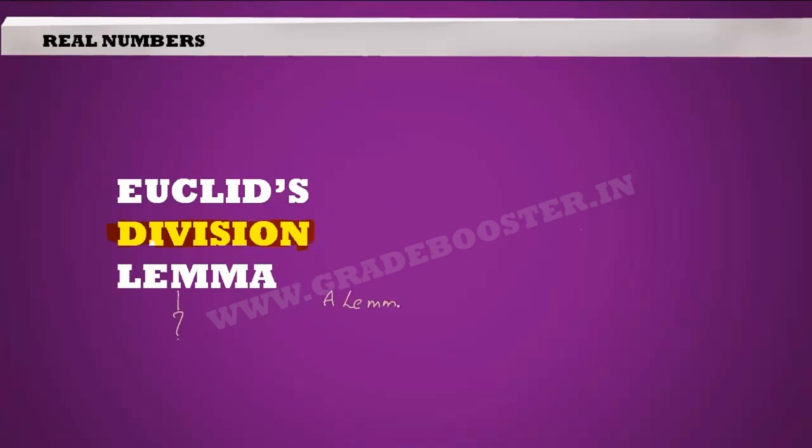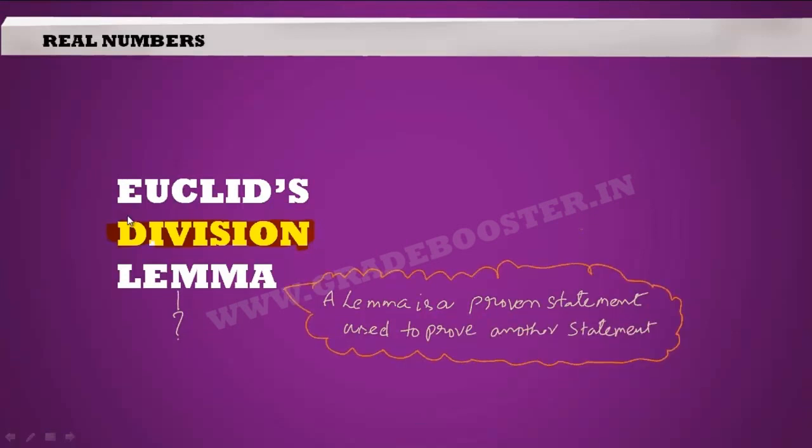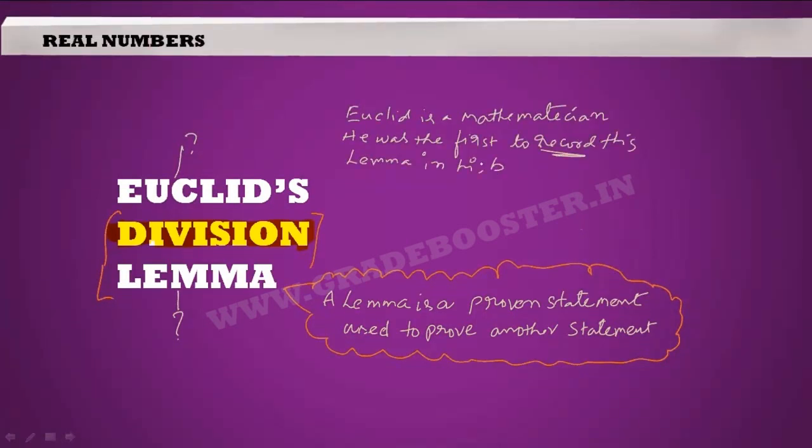So what is a lemma? A lemma is a proven statement which is used to prove another statement. As it is related to division process, you call it division lemma. Then who is this Euclid? Euclid is a mathematician. He was the first to record this lemma in his book 7 of Euclid's Elements.